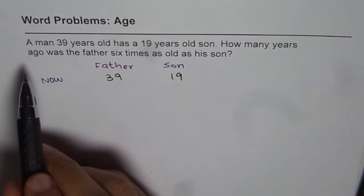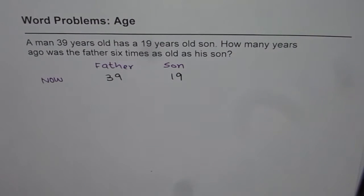It says how many years ago. So whenever it is ago, it is negative. You have to take away those many years. They will be younger.